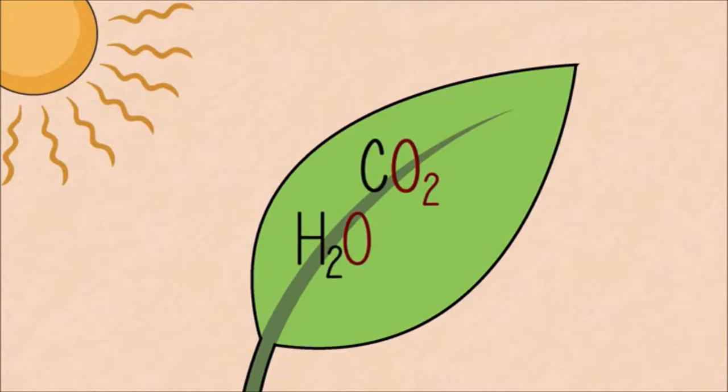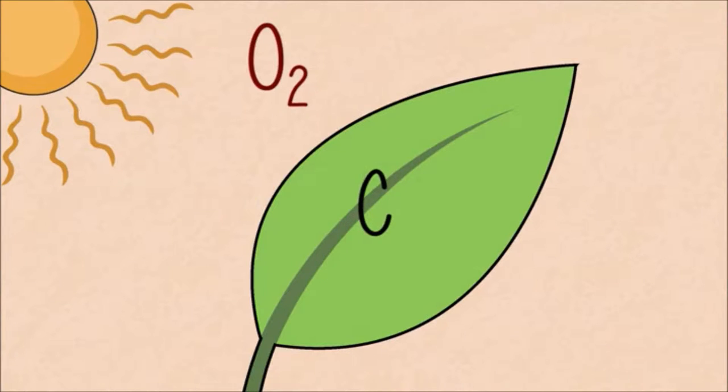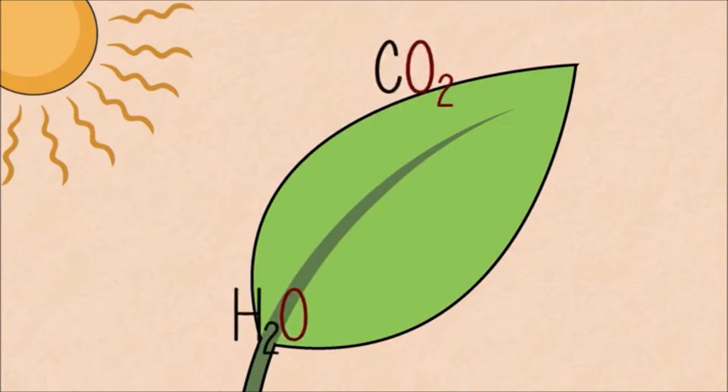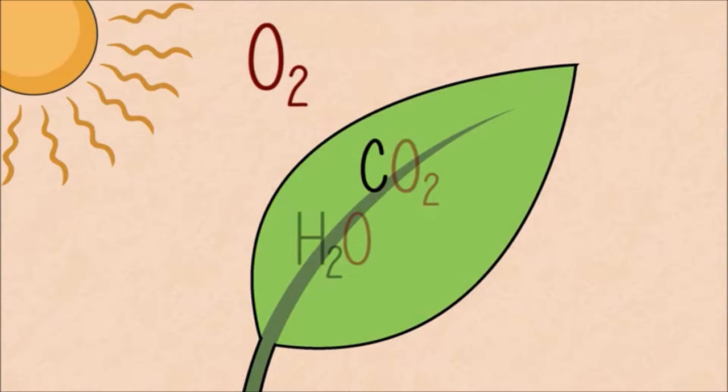Plants use the sunlight to pull oxygen away from water and carbon dioxide, allowing the plant to capture the carbon. This happens in the green chloroplasts found in the leaves of plants. What is the name of this reaction, perhaps the most important chemical reaction on the planet?